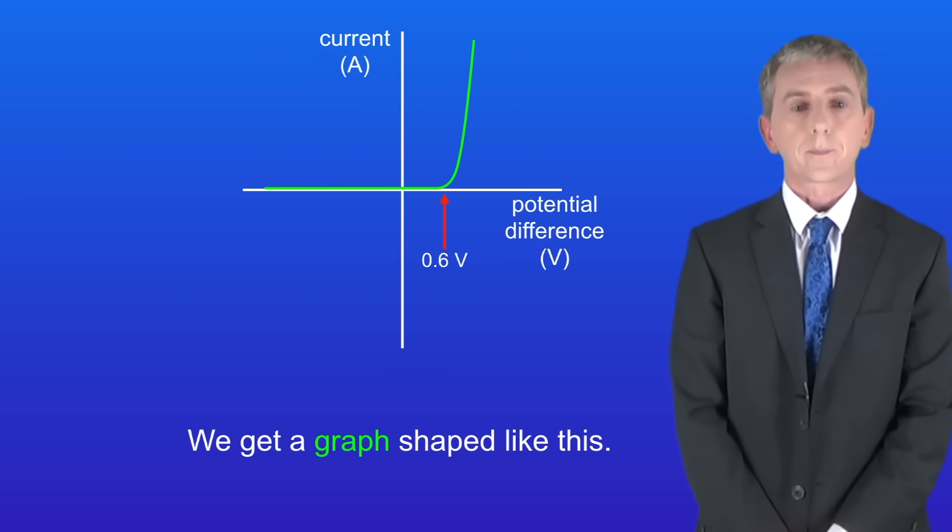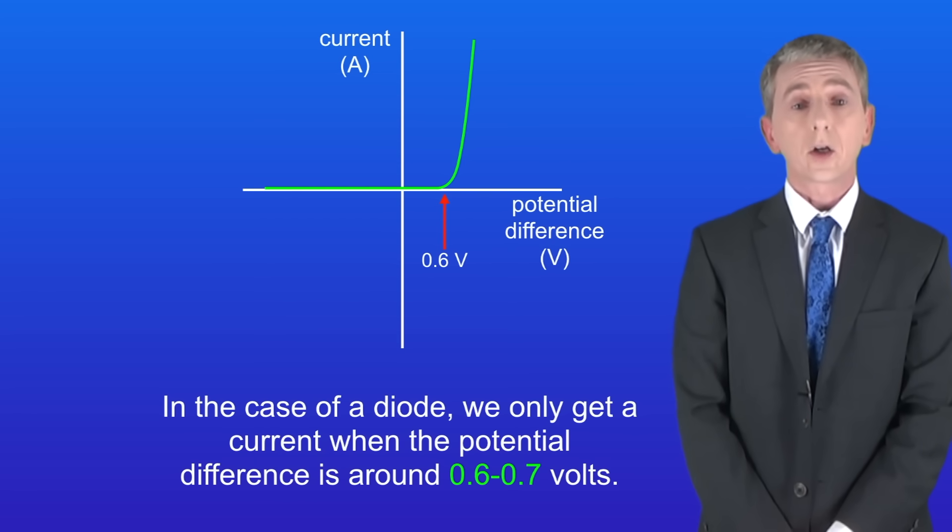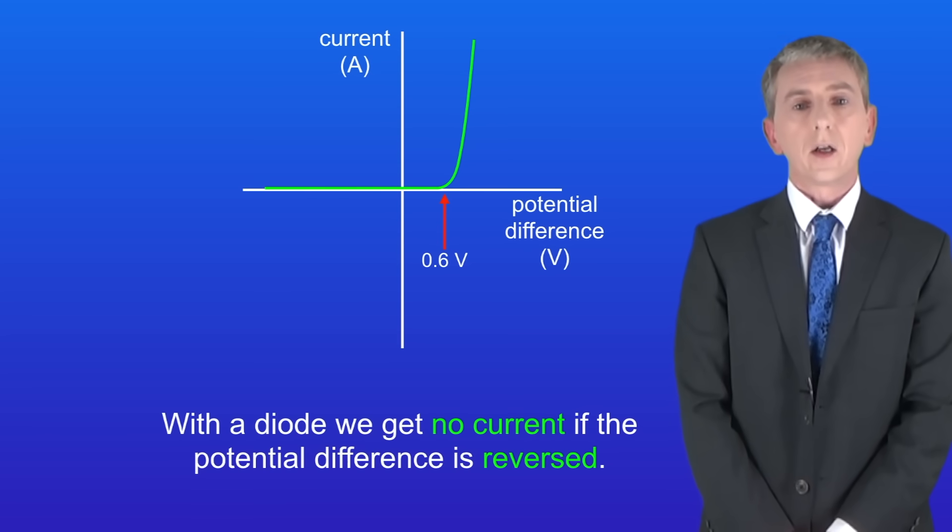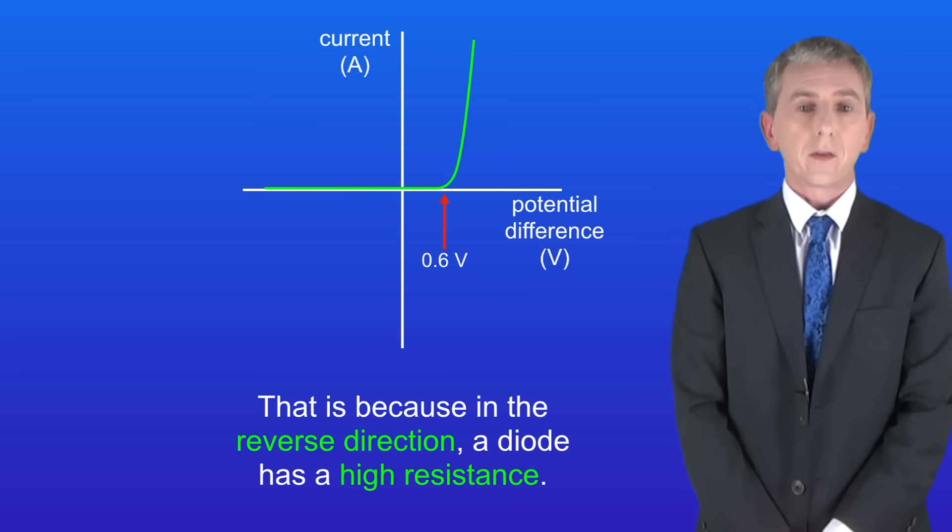We get a graph shaped like this. As you can see in the case of a diode we only get a current when the potential difference is around 0.6 to 0.7 volts. As the potential difference increases beyond this point the current rises sharply. Secondly, with a diode we get no current if the potential difference is reversed. That's because in the reverse direction a diode has a high resistance.